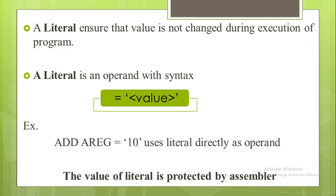A literal differs from a constant in that it helps ensure the value is not changed during execution of the program. A literal is an operand with the syntax equal to the value given in single quotes. For example, ADD A Register = '10' uses a literal directly as the operand. When the assembler encounters a literal in the operand field, it allocates a memory word to contain the literal's value. The value of a literal is protected by the assembler, whereas values defined using DC statements are not protected.